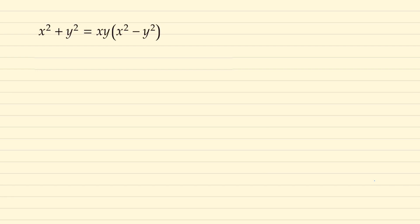So if we go ahead and square both sides of this equation then we arrive at the following. And we can rewrite the right side as x squared y squared times x squared plus y squared all squared minus 4x squared y squared.